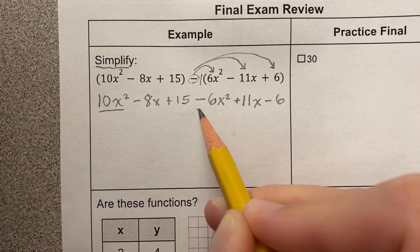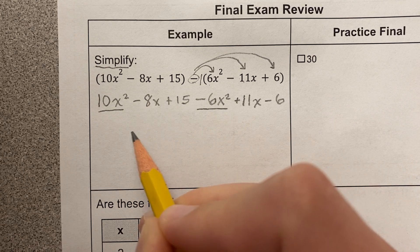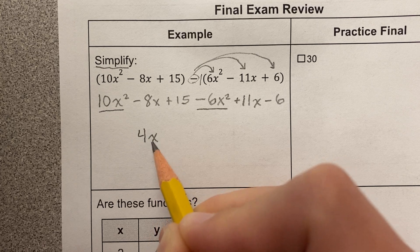And then my next step is I'm going to combine my like terms, so these both have x squared. 10 minus 6 is 4x squared.